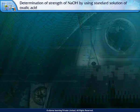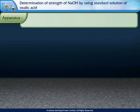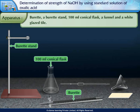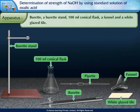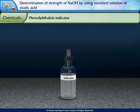The apparatus required are: a burette, a burette stand, a 100 ml conical flask, a funnel, a pipette, and a white glazed tile. The chemical required is phenolphthalein indicator.